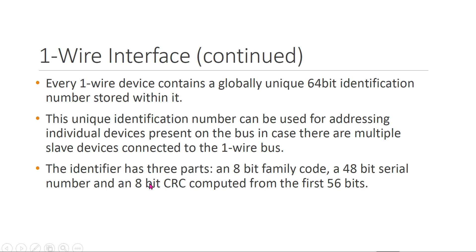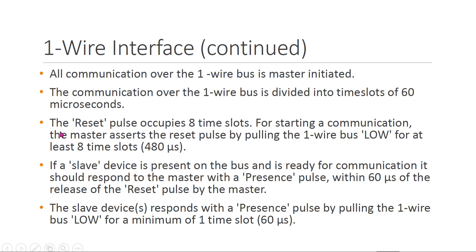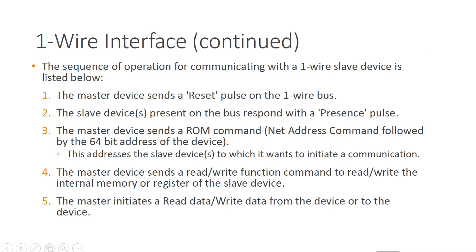The CRC is computed from the first 56 bits. So the 64-bit ID is divided into three parts: 8 bits, 48 bits, and again 8 bits. The sequence of operations for communicating with a One-Wire slave device is listed below. There are a total of five steps. The first step: the master asserts a reset pulse on the One-Wire bus.